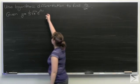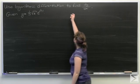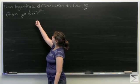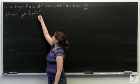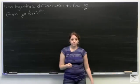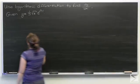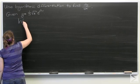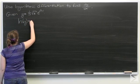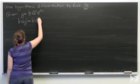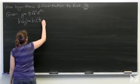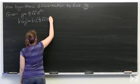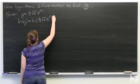We need to use logarithmic differentiation to find dy/dx for the function y equals one third times the square root of x times e to the x squared plus one. So let's do this. Natural log of y is equal to the natural log of one third times the square root of x times e to the x squared plus one.